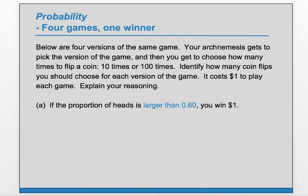Below are four versions of the same game. Your arch nemesis gets to pick the version of the game, and then you get to choose how many times to flip a coin — 10 times or 100 times. Identify how many coin flips you should choose for each version of the game. It costs $1 to play each game. Explain your reasoning.